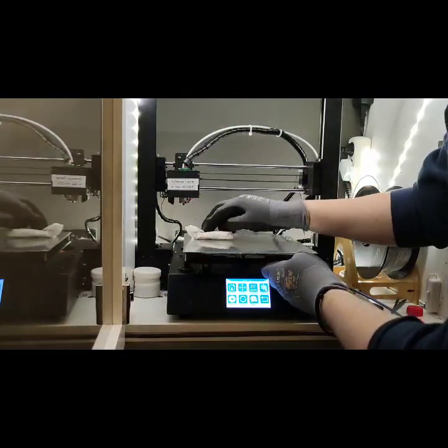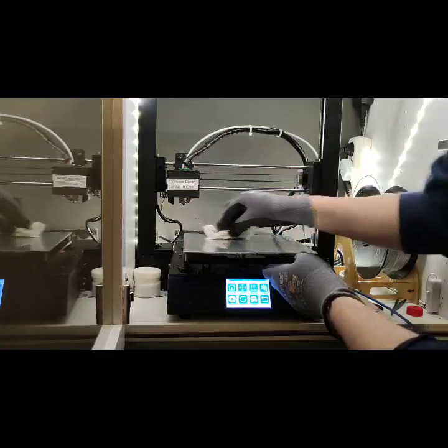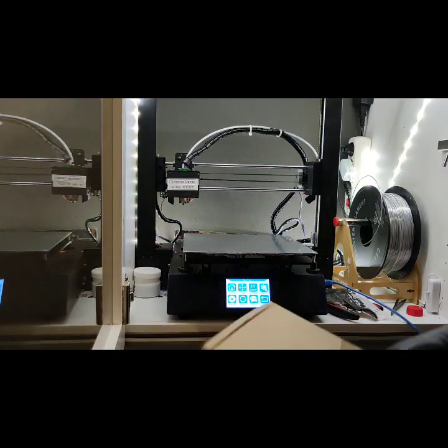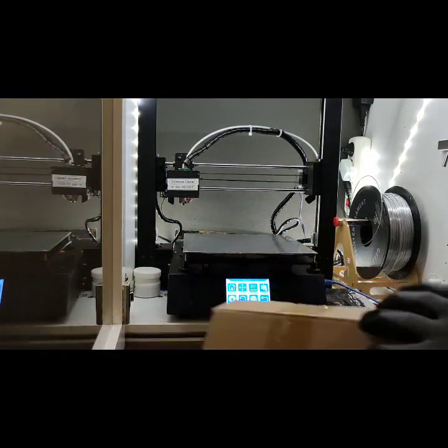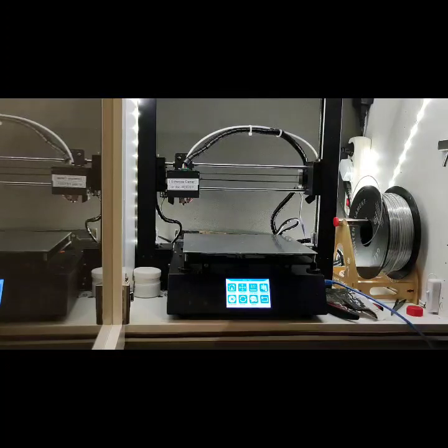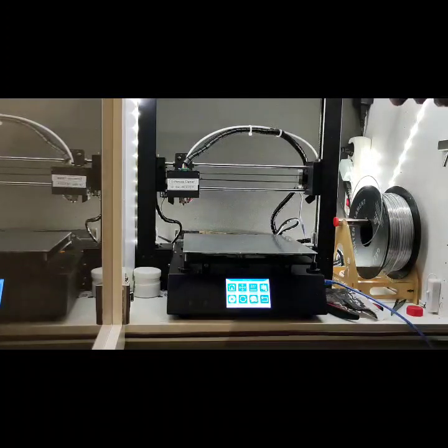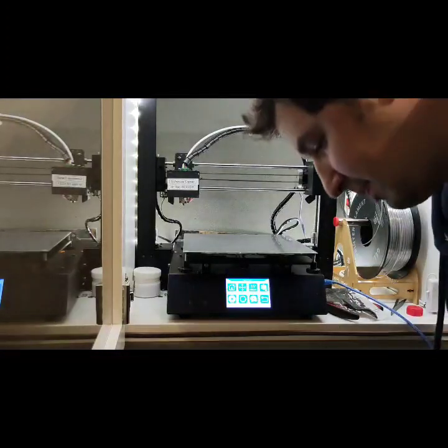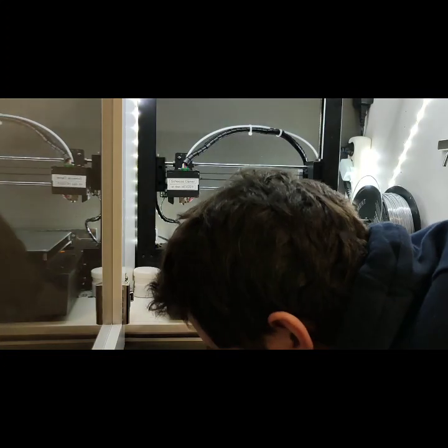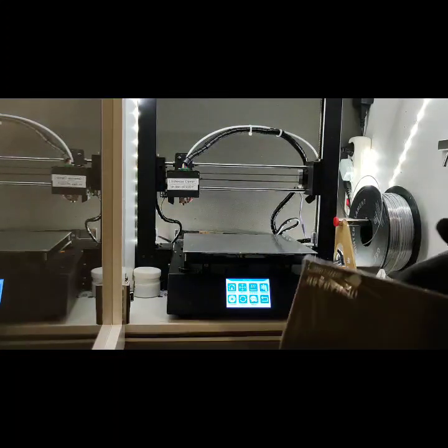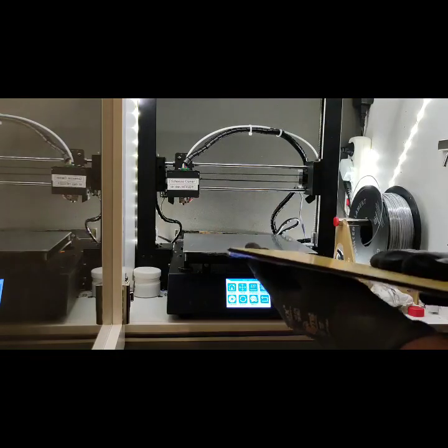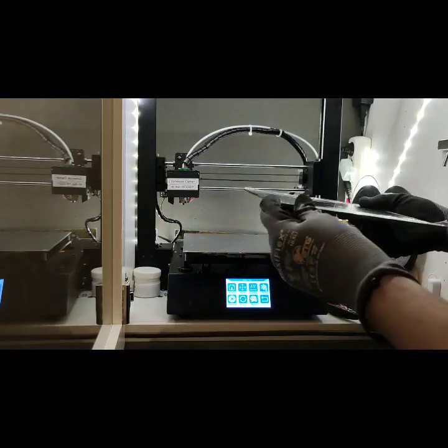There will be a gap between the aluminum heating plate and the glass plate, and this will be a problem. So now, just remove the sticker and put it on top.